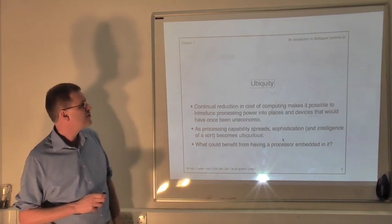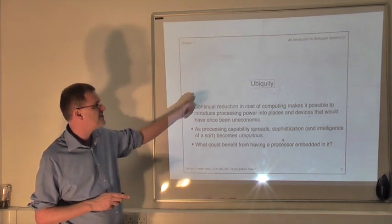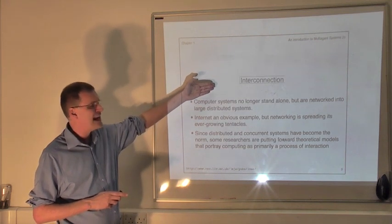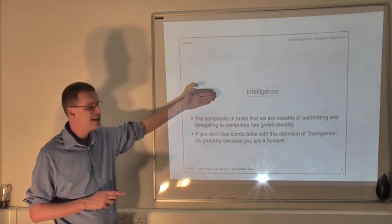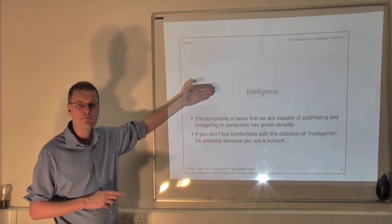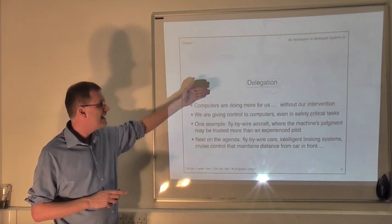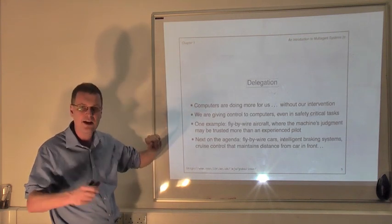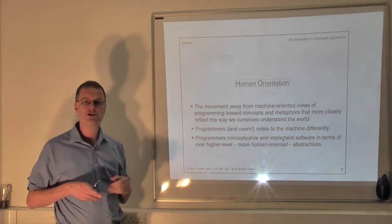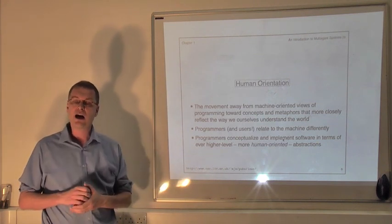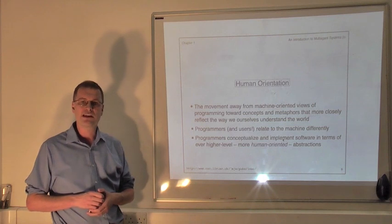So we've seen these five trends, the trends toward ubiquity, computer processing power everywhere, interconnection, the idea that these processors can communicate with one another. Intelligence, they're capable of solving more and more complex tasks. Delegation, the idea that we hand over control to these things. And finally, human orientation, the way that we interact with them more resembles the way that we interact with people.